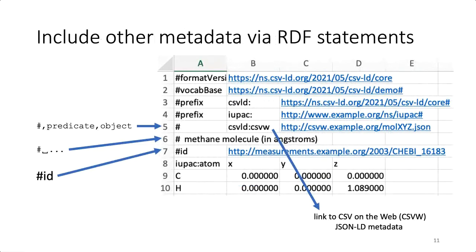Apart from directive statements, you can also include RDF statements in the header. Resource description framework statements are in the form of triples, with a subject, predicate, and object. The subject of each triple is the current sheet. The predicate is always a URI, and in this example, I am saying that CSVW metadata for this sheet is available at the URI given as the object of the triple. The header also accommodates comment lines, for which the comment prefix is followed directly by a space character. Finally, there is one additional directive in CSVLD beyond format version, vocab base, and prefix, and that is the ID directive, which allows you to assign a URI to identify the sheet, and thus the subject of any RDF statements in the header.